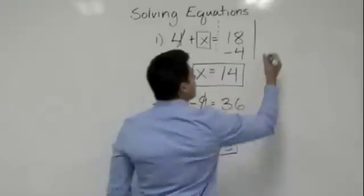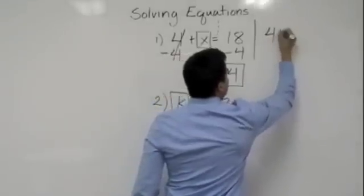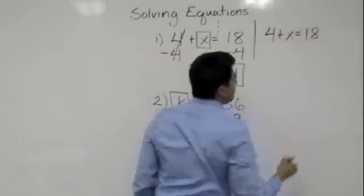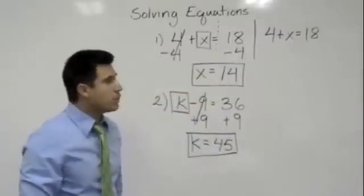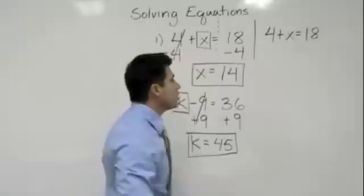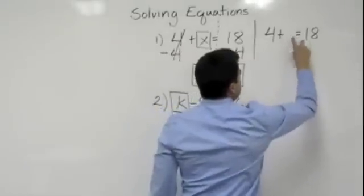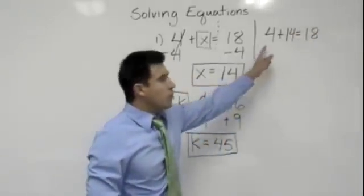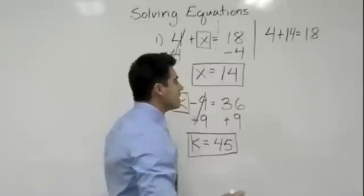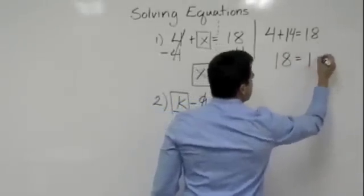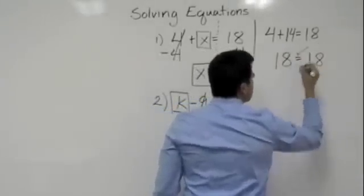So, the original equation was 4 plus x equals 18, right? Well, what we do is we want to go ahead and just plug our answer in for the variable. So, now we would say 4 plus 14. 4 plus 14 is 18. And, we bring down the 18,